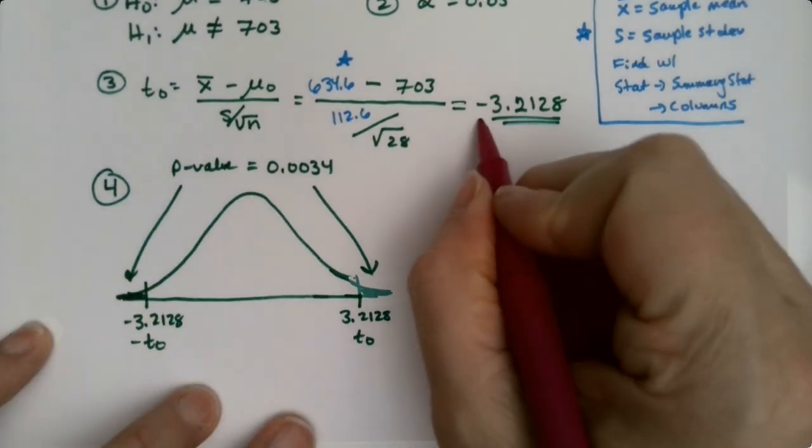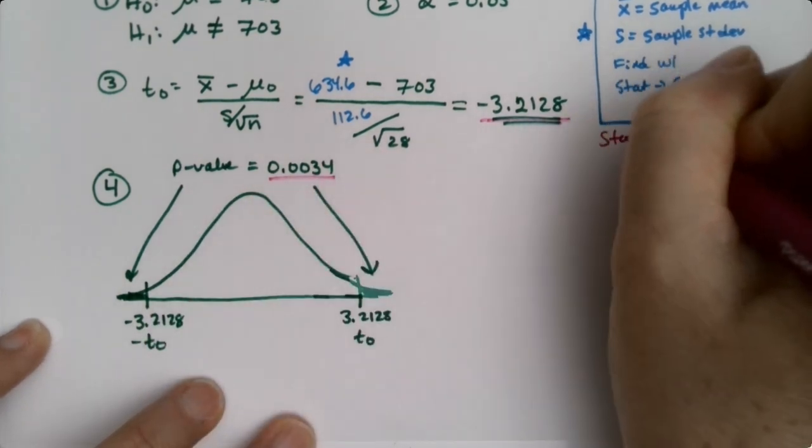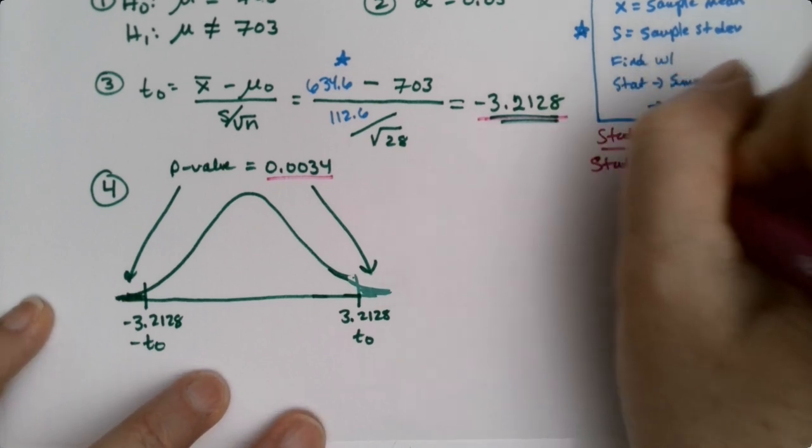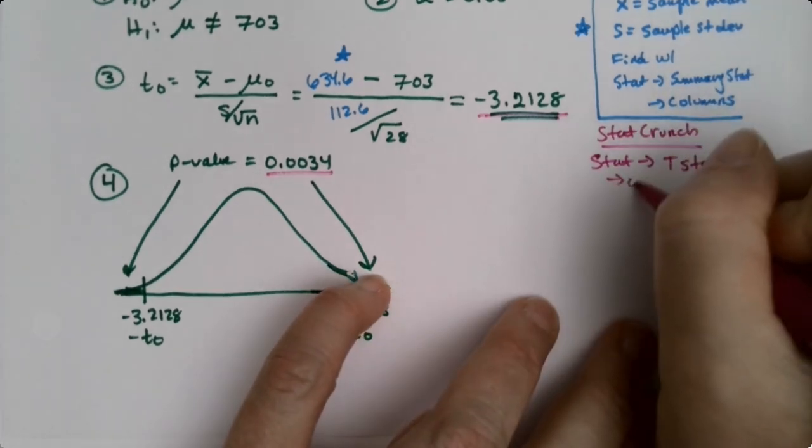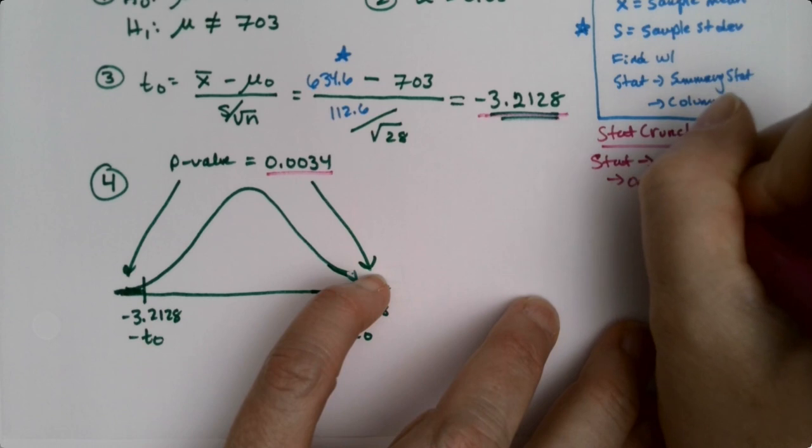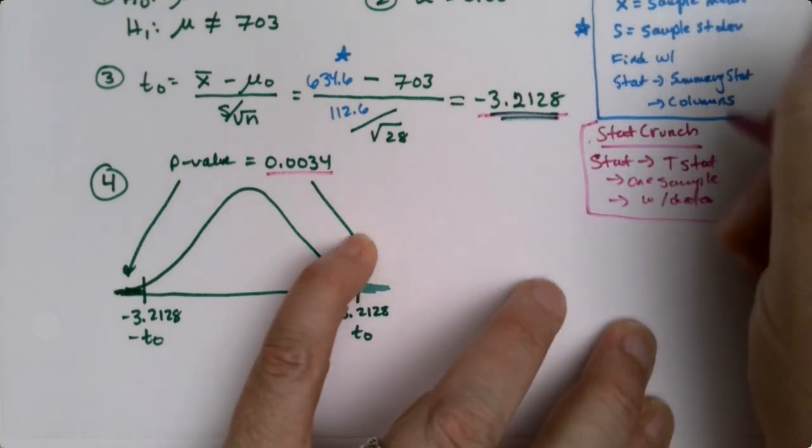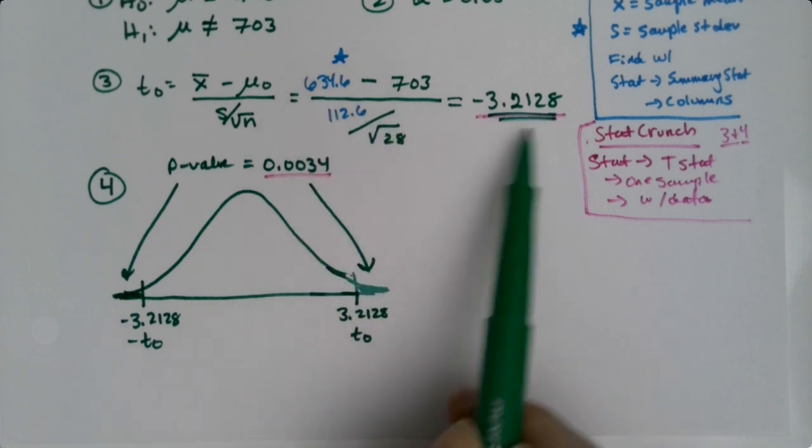But we better make notes. So we found this value and this value with stat crunch. So stat crunch, we did stat, t-stat, one sample with data. That's how we got step three and four. To do steps three and four, we made stat crunch do the heavy lifting. Not the beginning part of step three, but the end of step three right here.